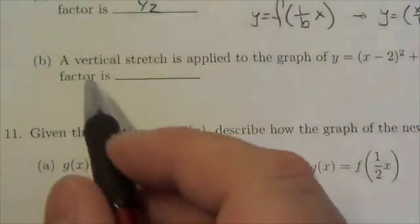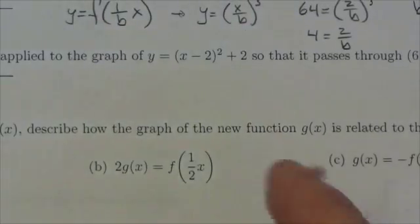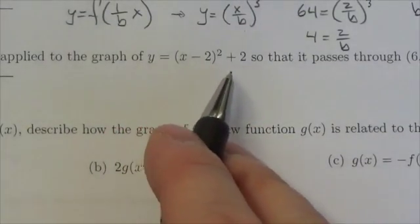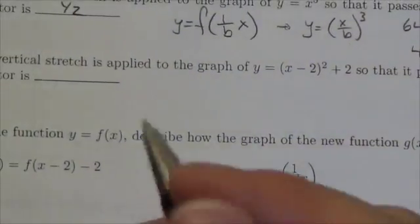Hi everyone, so this question says that a vertical stretch is applied to the graph of y = (x - 2)² + 2 so that it passes through the point (6, 27). The vertical stretch factor is...